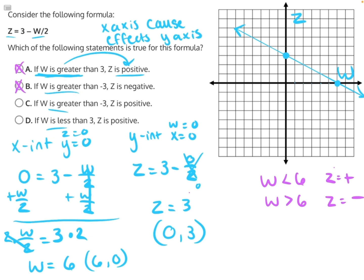C says if w is greater than negative 3, again right here, z is positive. This is true part of the time, but not all of the time, because once we cross the axis, all of the values become negative. Therefore, C is incorrect.